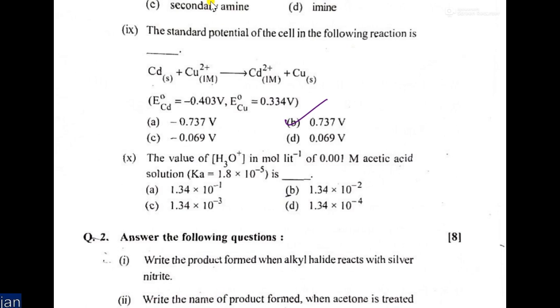Then the tenth one: the value of H3O+ in mol H+ of 0.001 M acetic acid solution, its answer is actually D, because the Ka when it products with your C, that given moles.